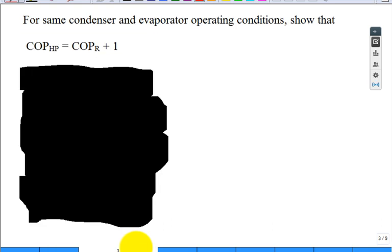You have the same condenser, the same evaporator, the same operating conditions, the refrigerant's flowing there. Can you show that the COP of a heat pump is one plus the COP for the refrigeration?